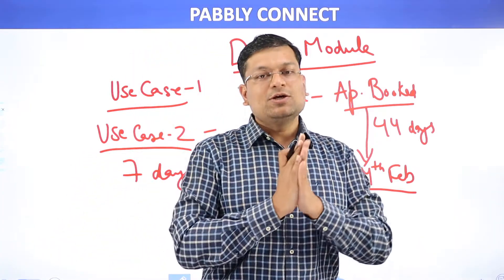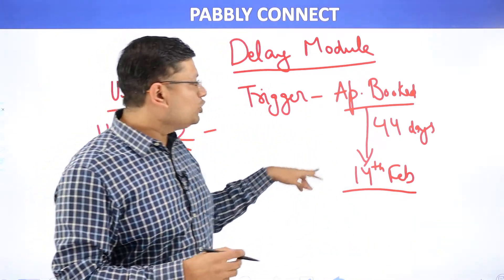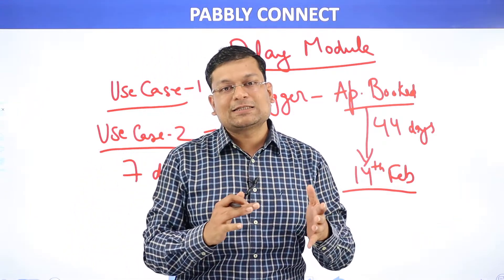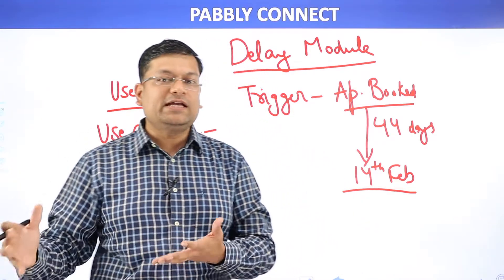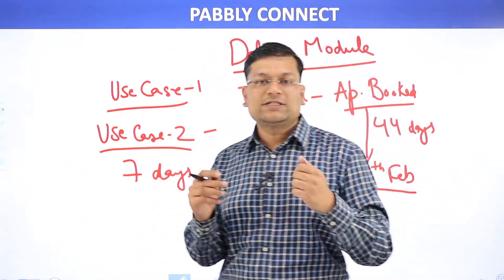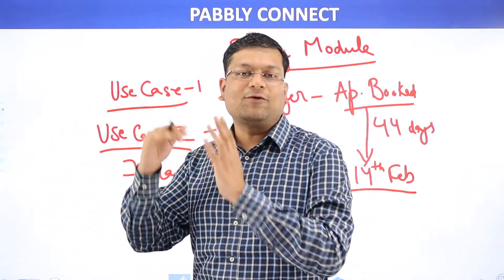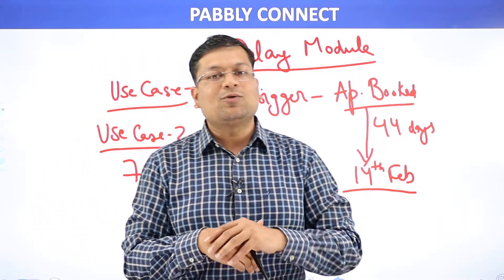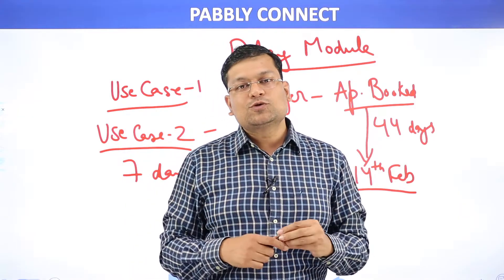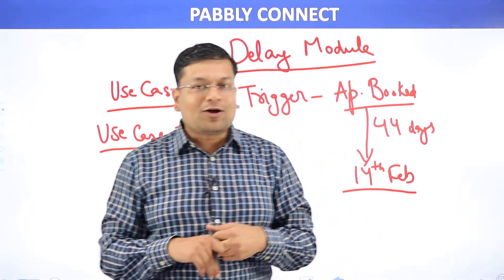We are coming up with two delay options. The first is 'delay until' — if you want to delay a specific step until a specific date, you can do that. The second option is 'delay for' — delay for seven days, delay for ten days, delay for one month. Those are the options coming inside the delay module, and it will be very useful inside your workflows.